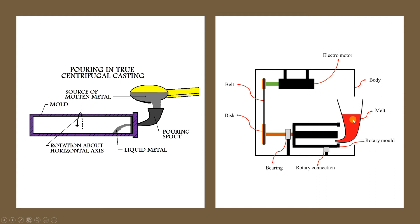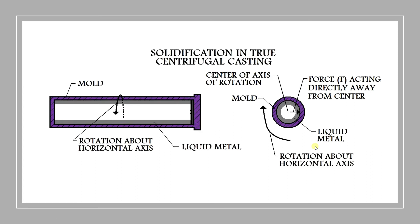Molten metal is delivered over here. We can also make linear adjustments — the pouring can move in and out depending on the application. As you can see in this clear diagram, the mold rotates and liquid material fills inside. It is sealed, so there is no chance of molten metal sticking to the mold. To help with removal, we use lubricants between the two — graphite, metallic powders, or lubricant oils.